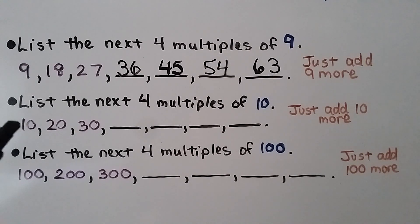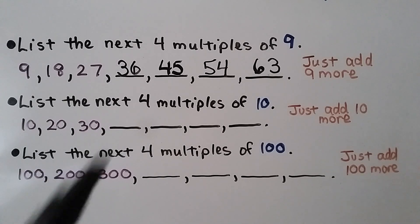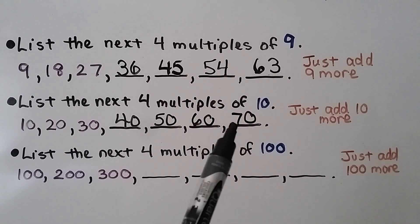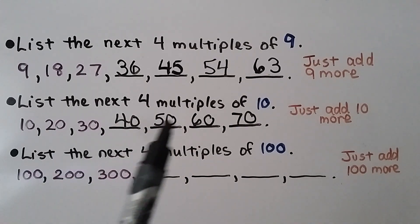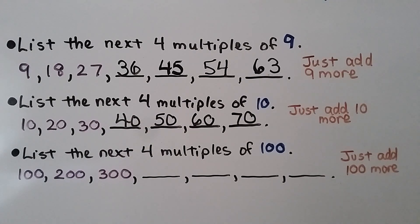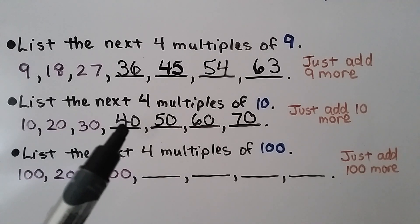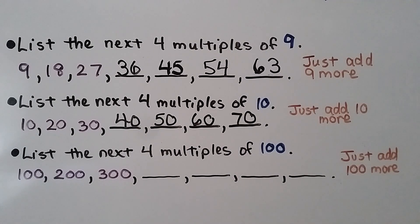Now we need to list the next 4 multiples of 10 — this is easy. We have 10, 20, 30, 40, 50, 60, and 70. We just need to add 10 more to each multiple. This is 1 times 10, 2 times 10, 3 times 10, 4 times 10, 5 times 10, 6 times 10, 7 times 10.